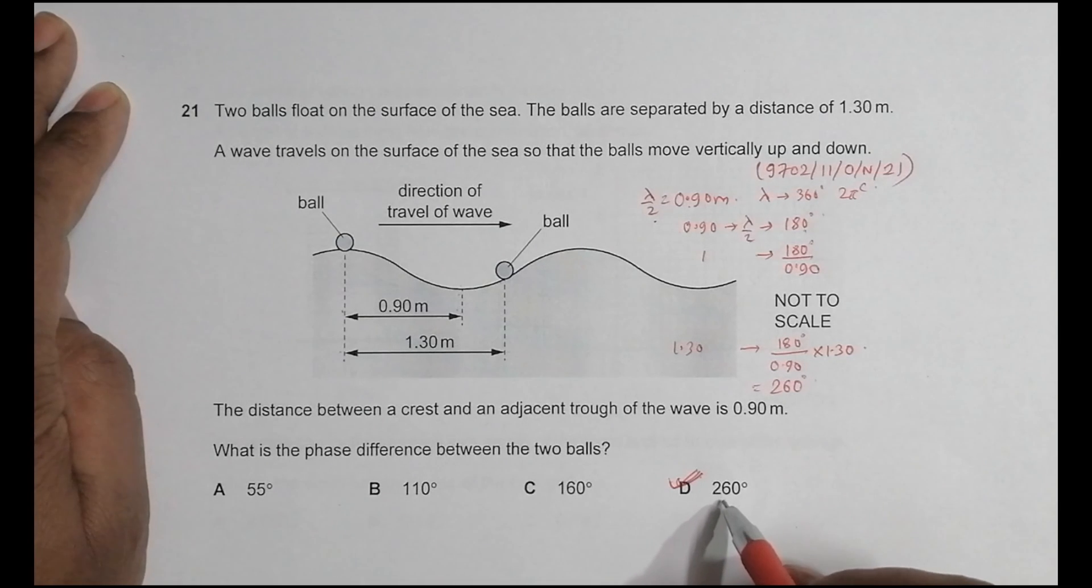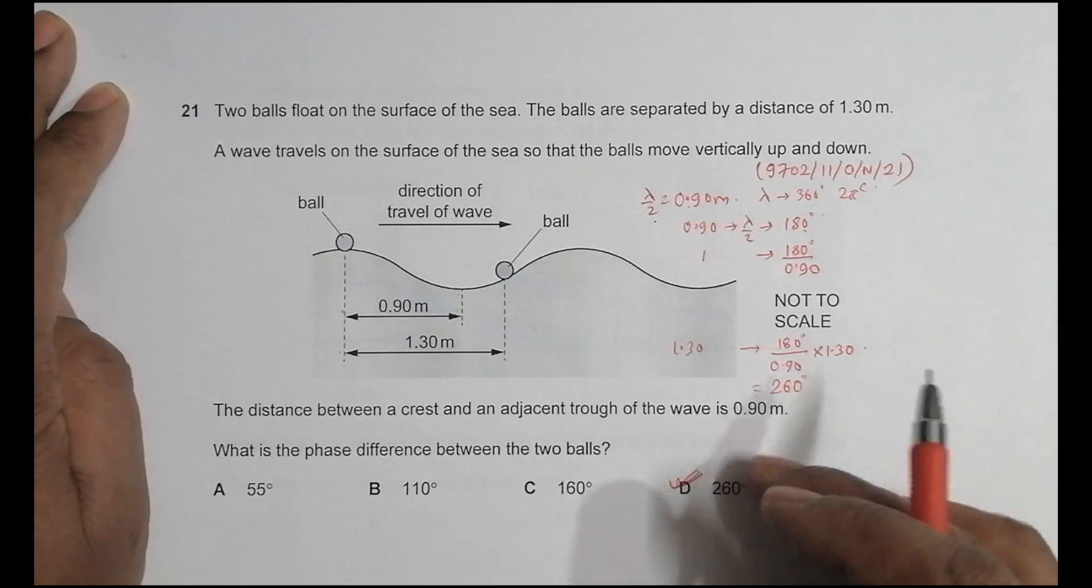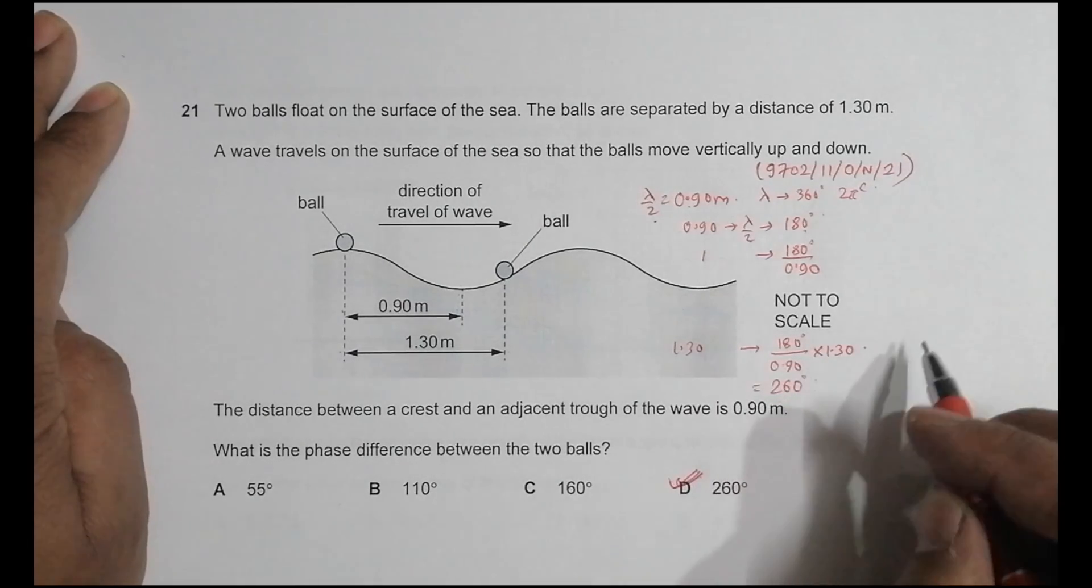The only thing more than 180 less than 360 is 260. So that also is another way of doing this. So I prefer that you know the theory first and then attempt the answer. So D is the correct choice.